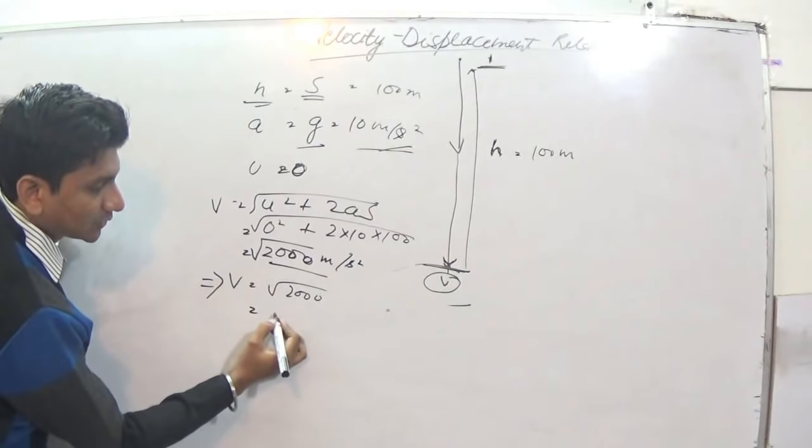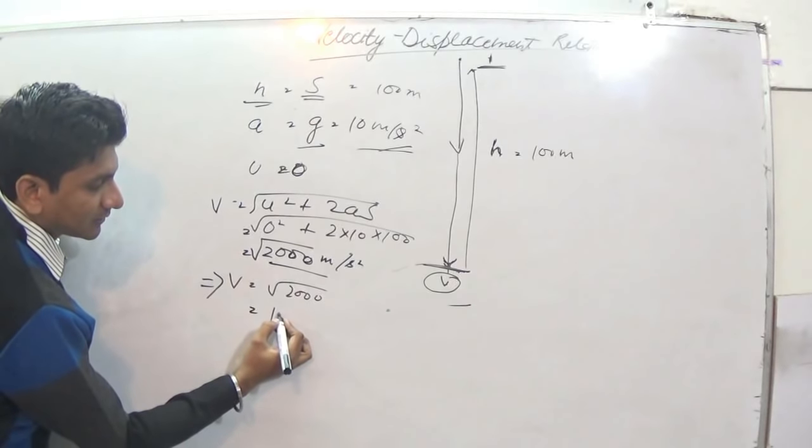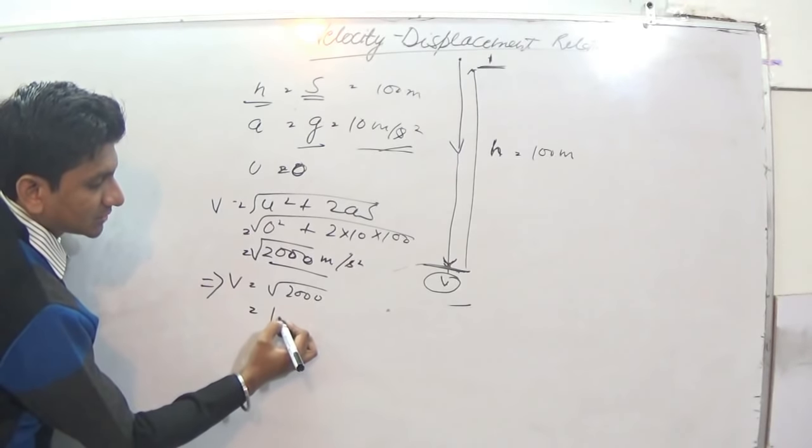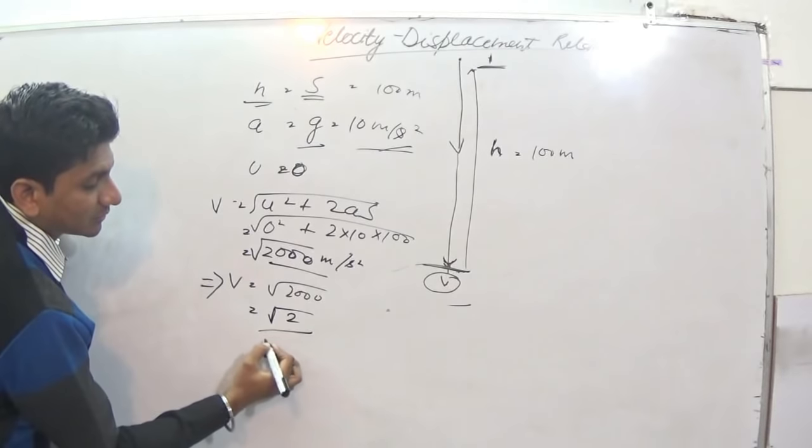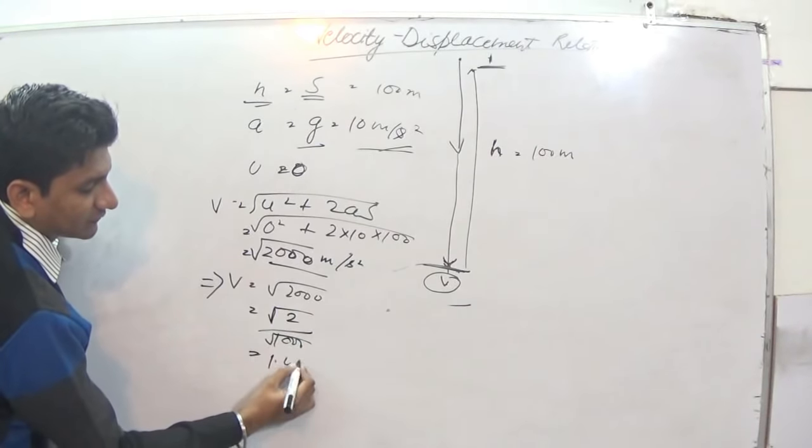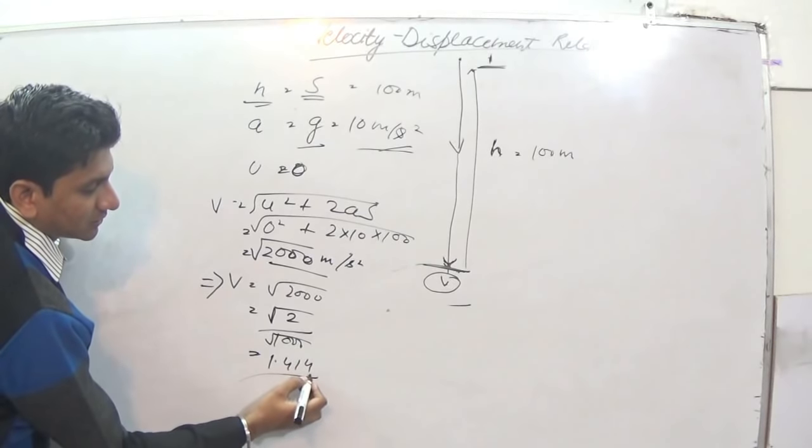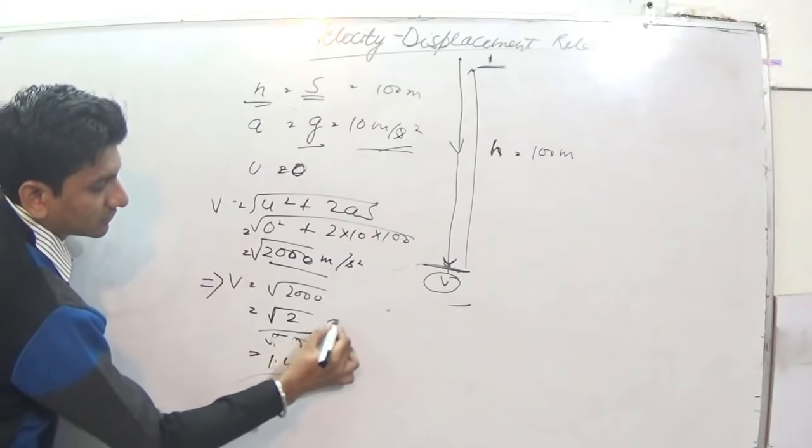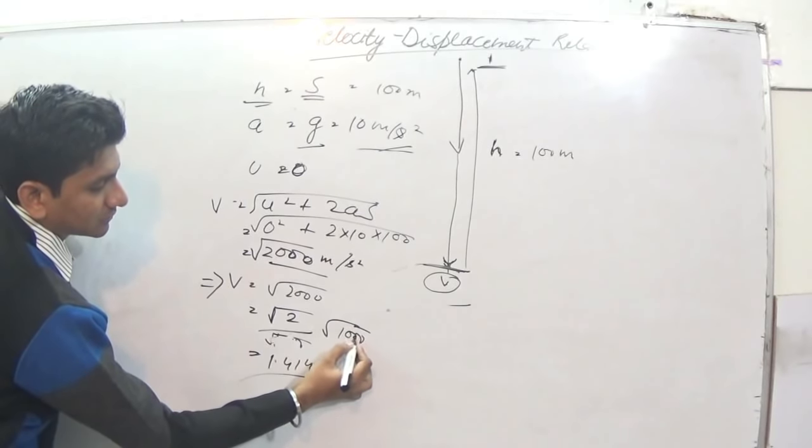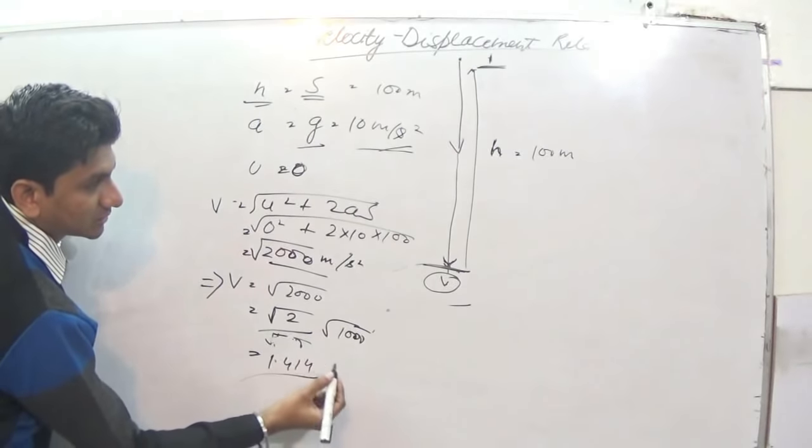Approximately, it will come up to how much? 2000 divided by, approximately, you can put like this. It will become 1.414, 10 under root 10, type of approximately.